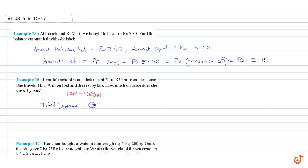Total distance is equal to 5 km plus 350 m, equal to 5 km plus 350 by 1000 kilometers. This is equal to 5.35 kilometers.